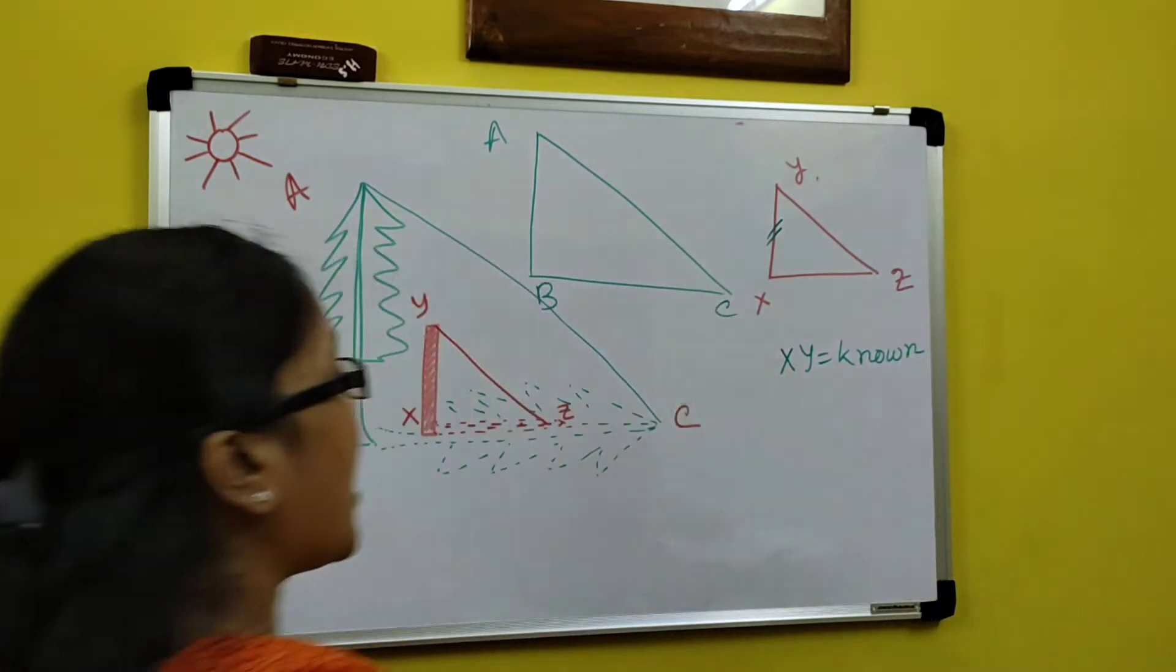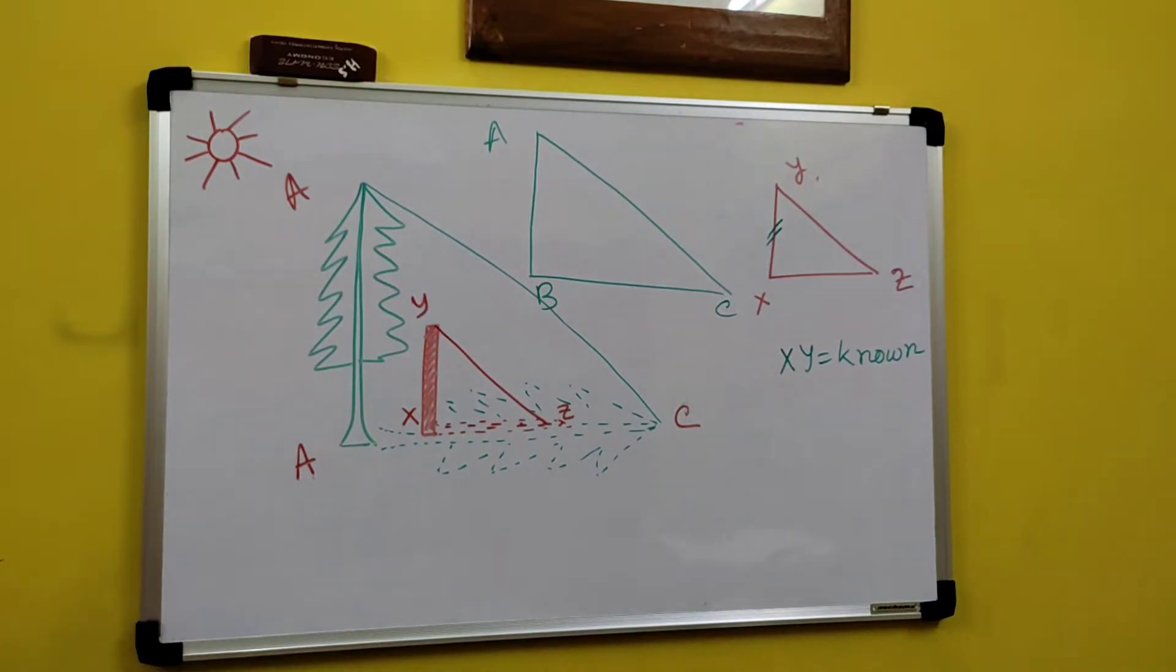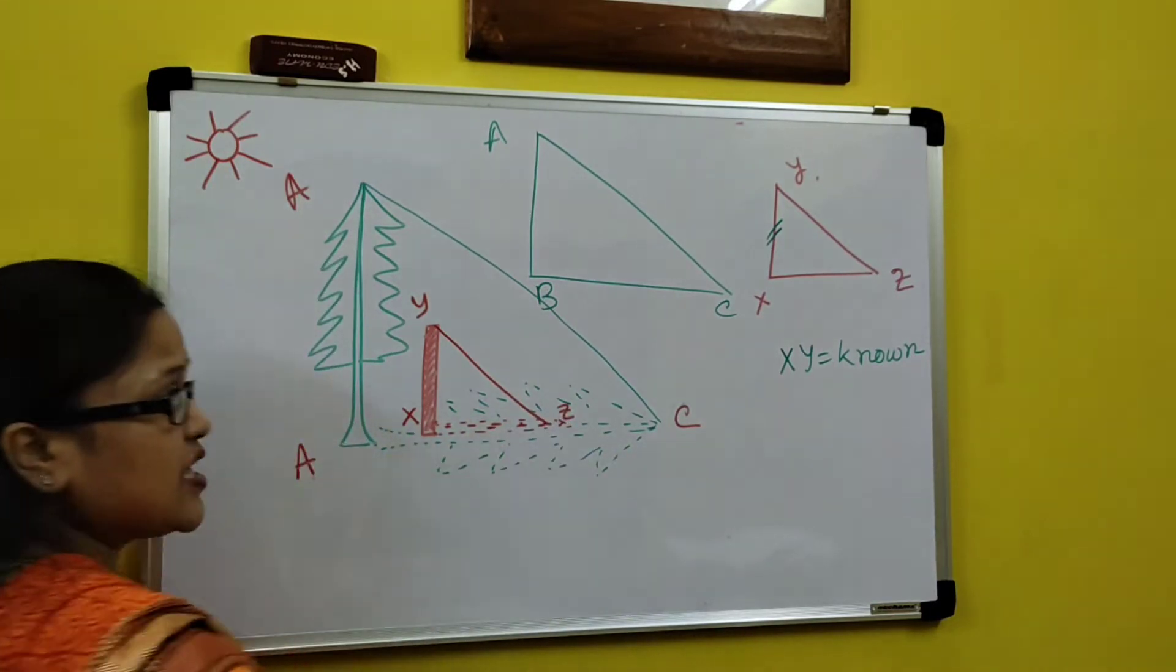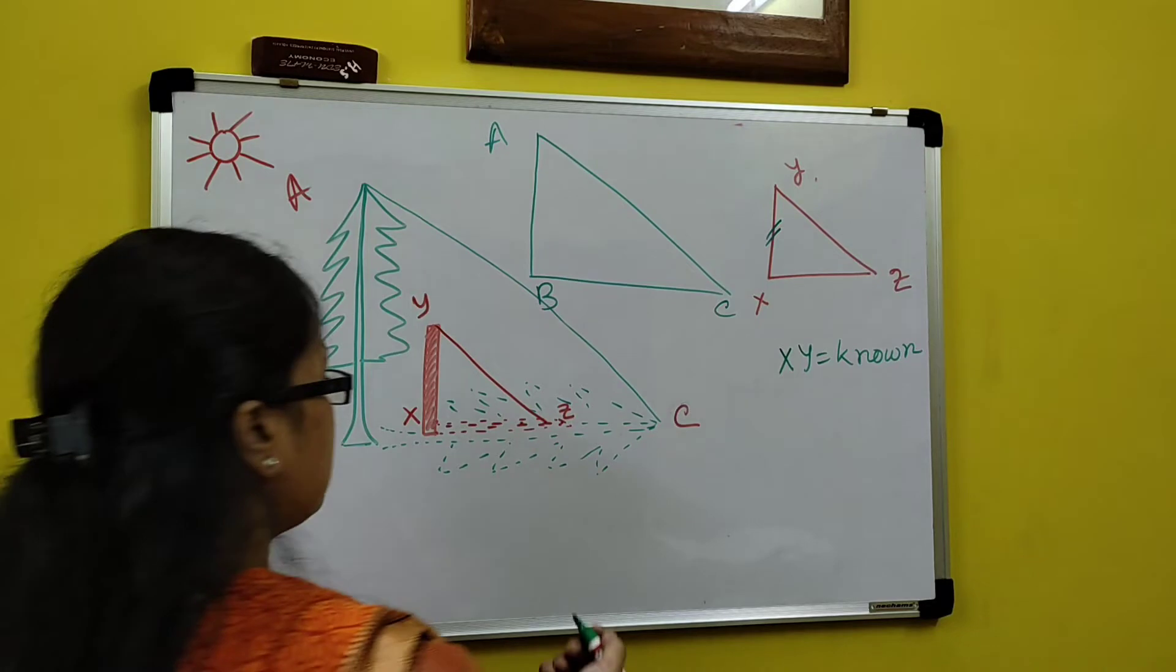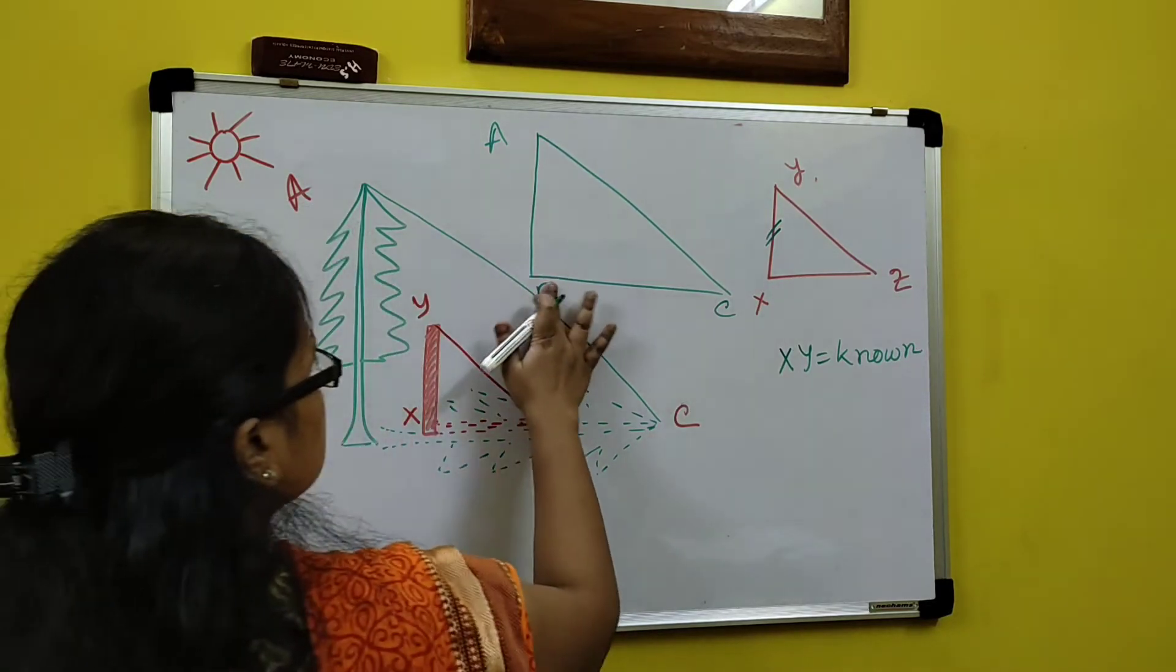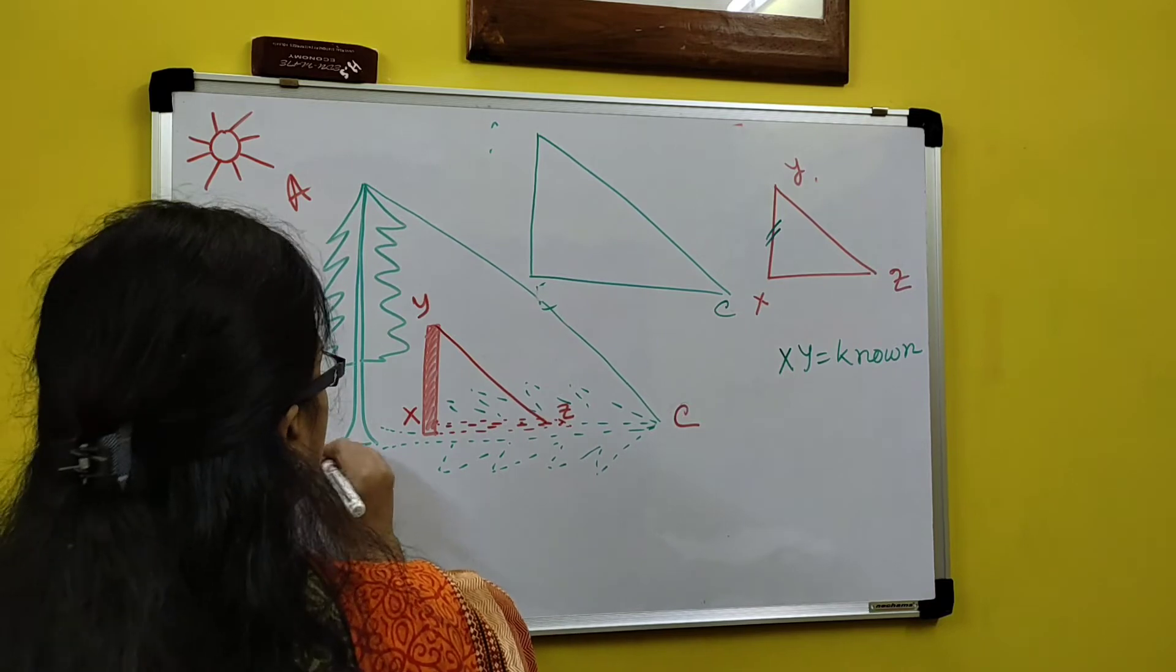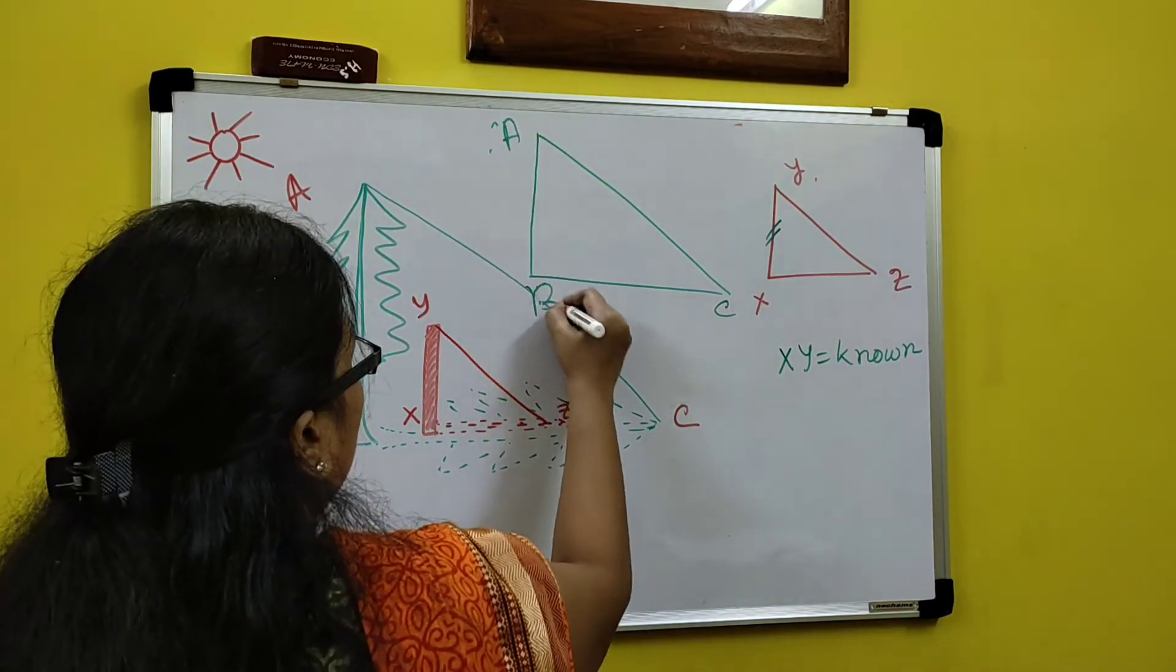Now, as I am on the ground, I can easily measure this length. Length of two shadows means AC and XJ I can measure. I have this one now.